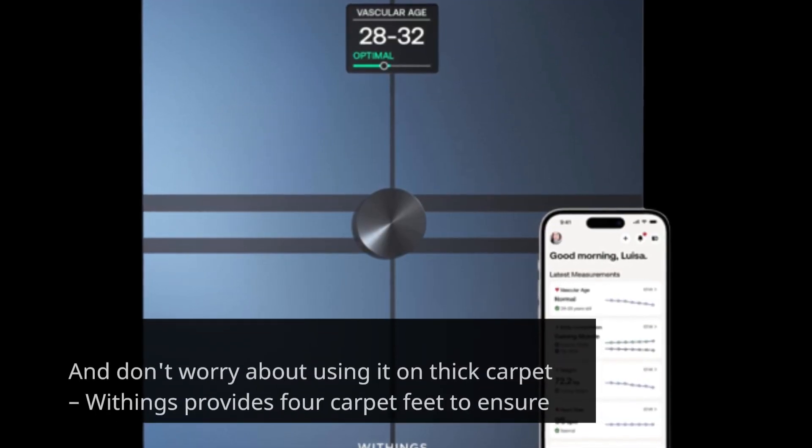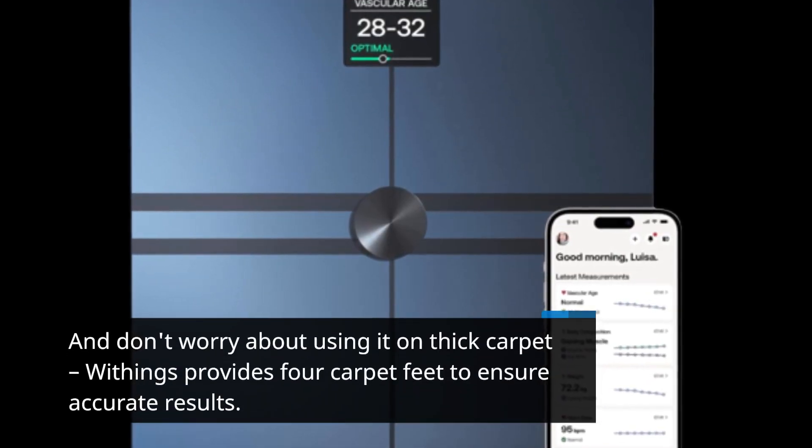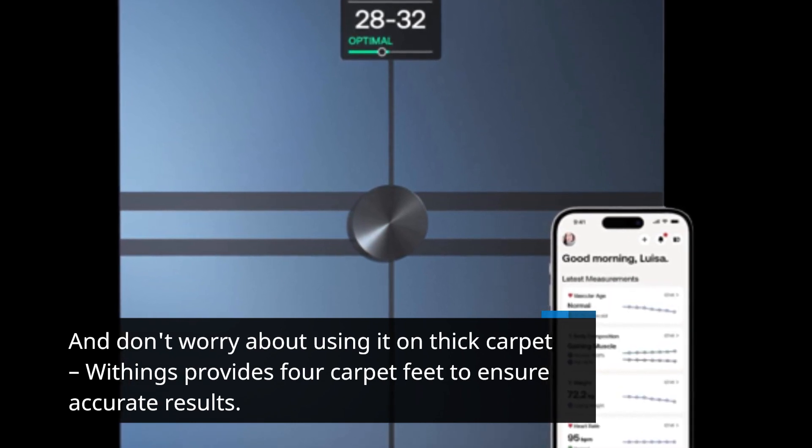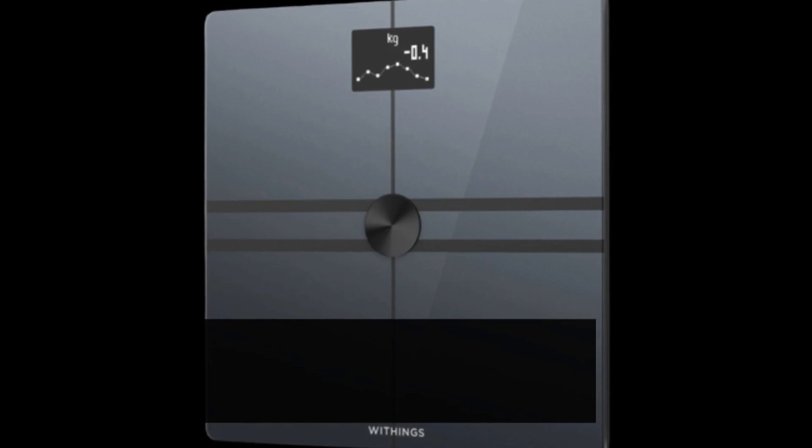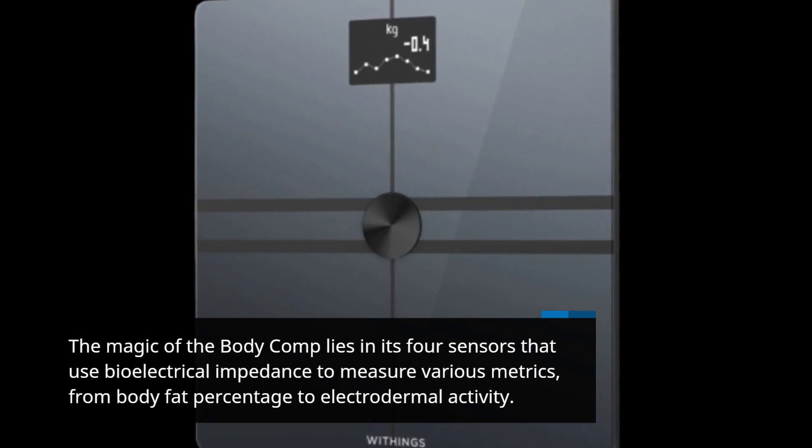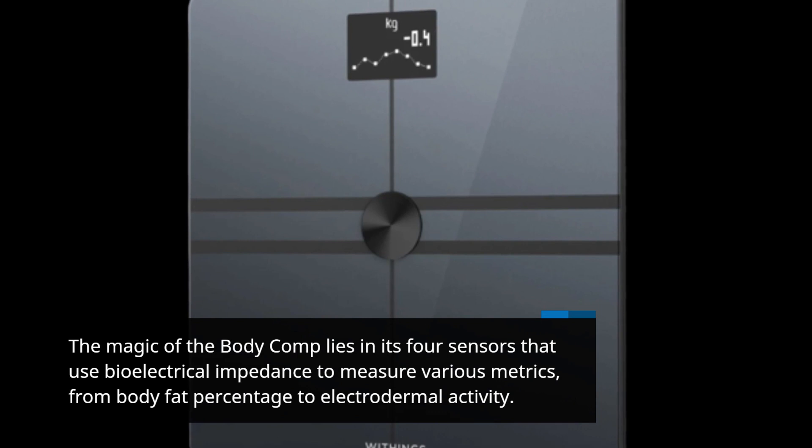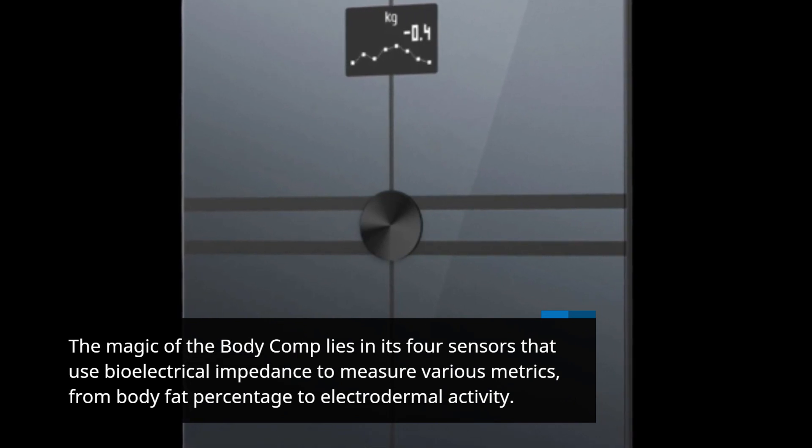And don't worry about using it on thick carpet - Withings provides four carpet feet to ensure accurate results. The magic of the Body Comp lies in its four sensors that use bioelectrical impedance to measure various metrics, from body fat percentage to electrodermal activity.